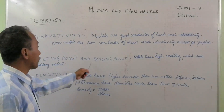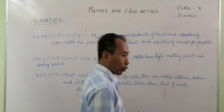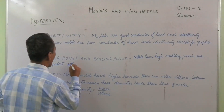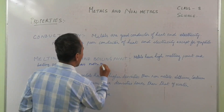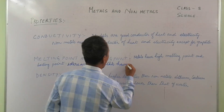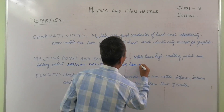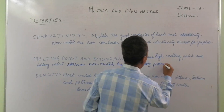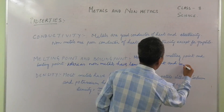Now melting point and boiling point. Metals have high melting point and boiling point, whereas non-metals have low melting point and boiling point.